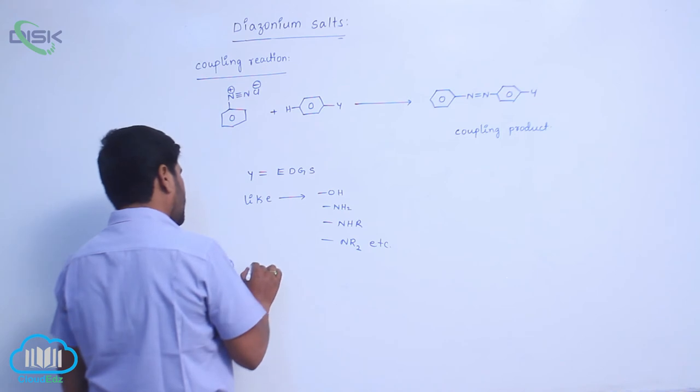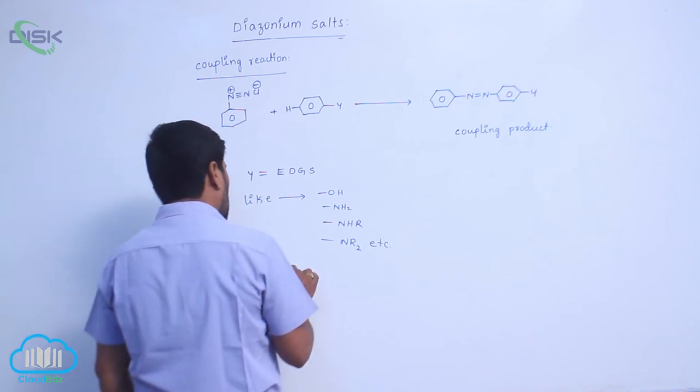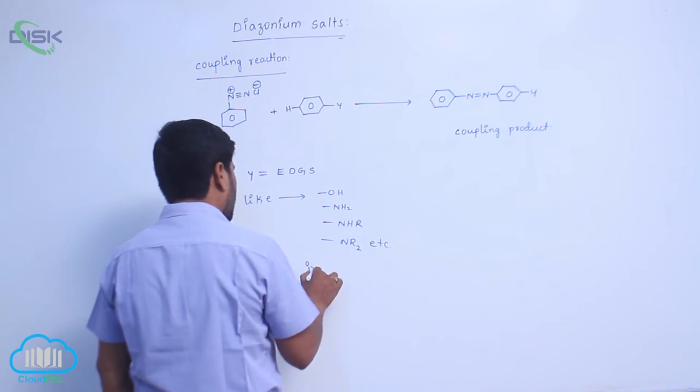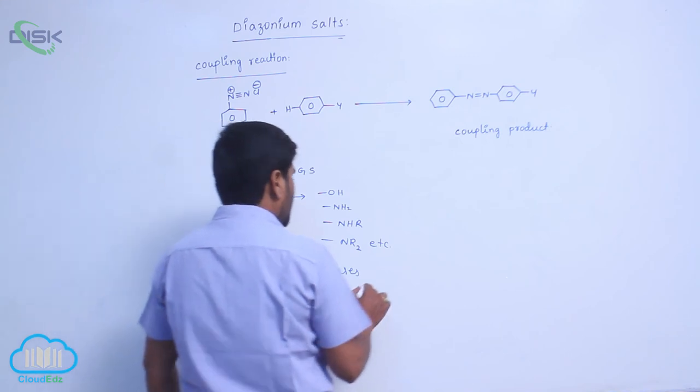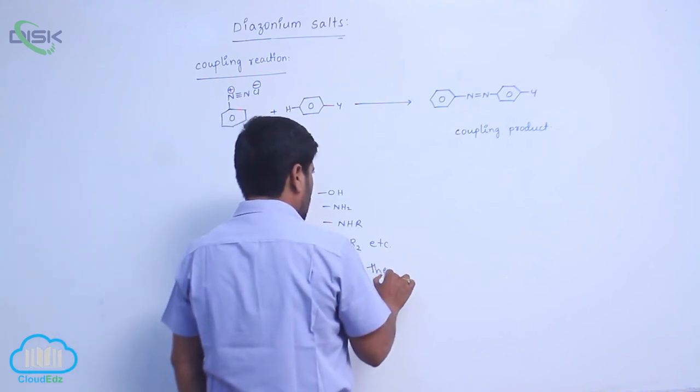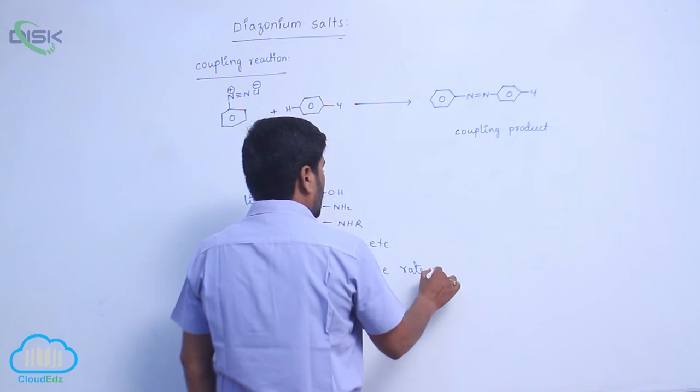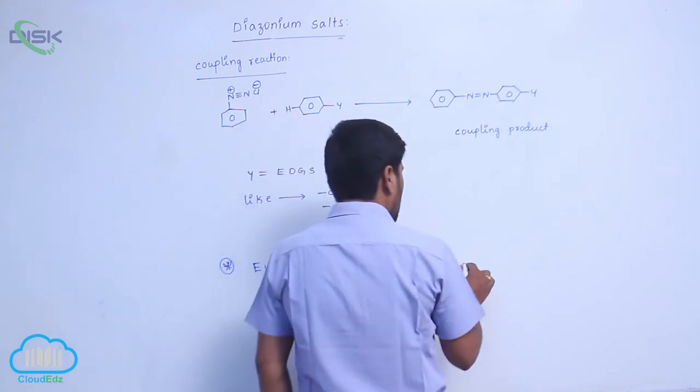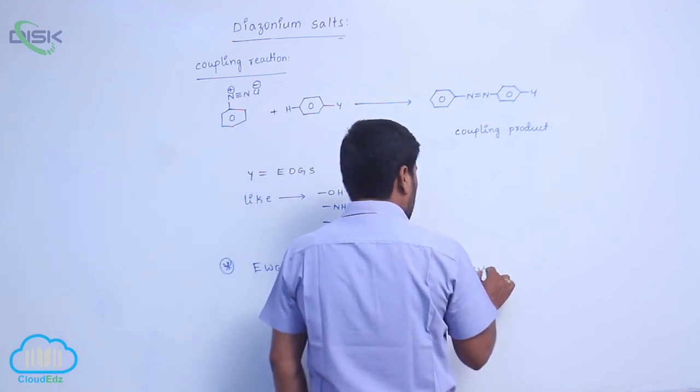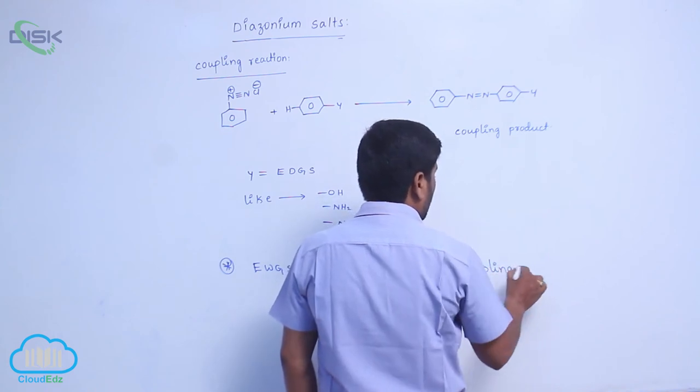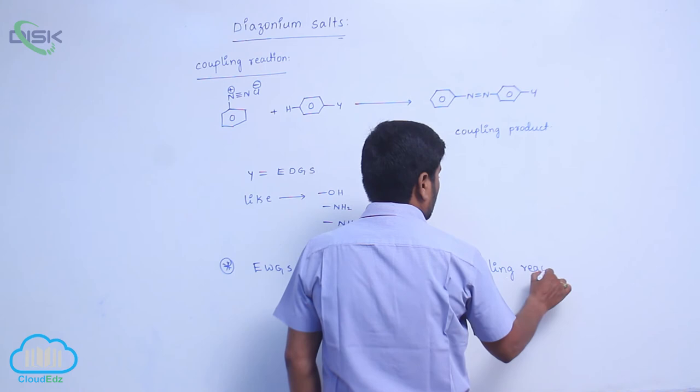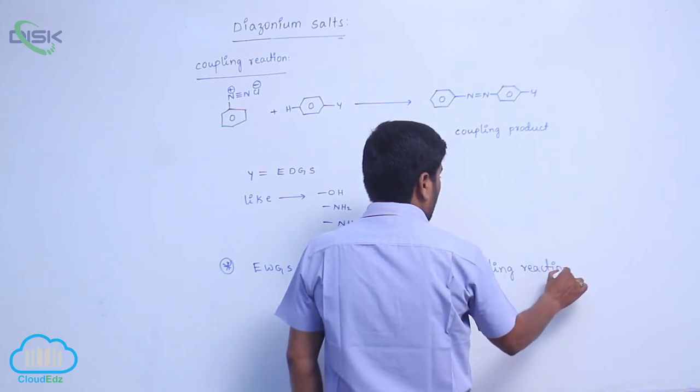Electron withdrawing groups increases the rate of coupling reactions.